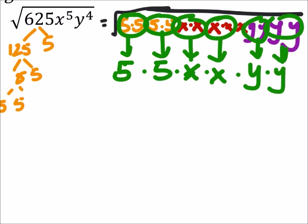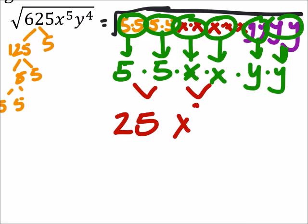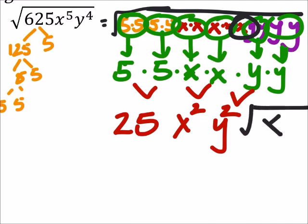So 5 times 5 is 25, x times x is x squared, and y times y is y squared. And we did have something remaining in the square root. It's just the square root of x there.